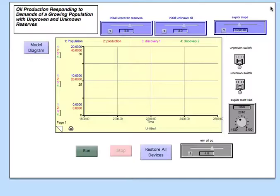Here's what it looks like when you interact with the model. You open the model you'll see this. You can turn on these switches here. There's the unproven switch and here's the unknown switch. Now we're set to tap into those two new sources of oil.